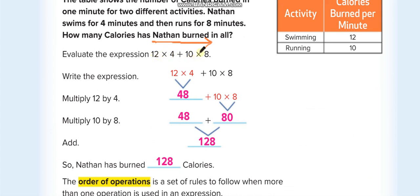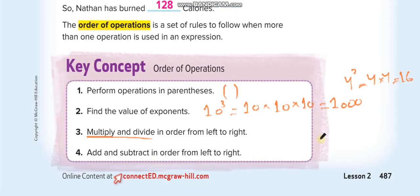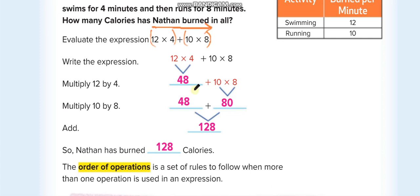For example: 12 times 4 plus 10 times 8. First, finish the multiplications: 12 times 4 equals 48, and 10 times 8 equals 80. Then add them: 48 plus 80 equals 128. Do not do 48 plus 10 — that would be wrong. You must finish all multiplications and divisions from left to right before adding.